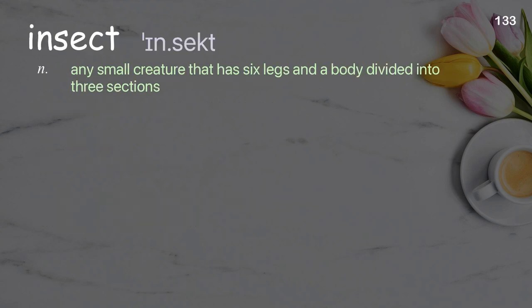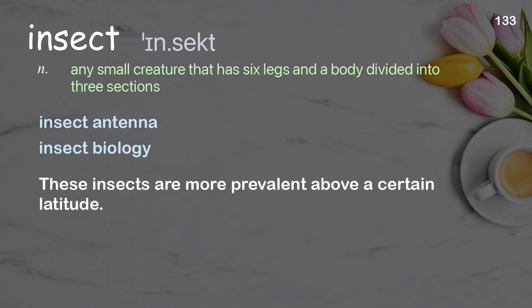Insect: any small creature that has six legs and a body divided into three sections. Examples: insect antenna, insect biology. These insects are more prevalent above a certain latitude.